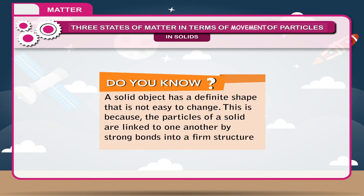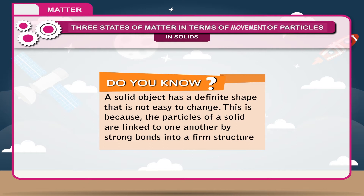Did you know? A solid object has a definite shape that is not easy to change. This is because the particles of a solid are linked to one another by strong bonds into a firm structure.